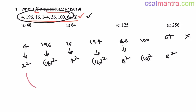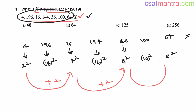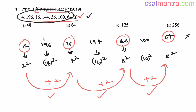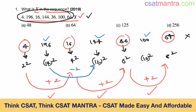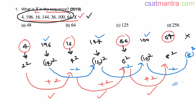From here to here, plus 2. From here to here, plus 2. From here to here, plus 2. So these numbers are following a pattern. Now what about these numbers? 14 square to 12 square — this is minus 2. 12 square to 10 square — minus 2. So from 10 square to X, minus 2, that is 8 square. 8 square is 64. So our answer is B.